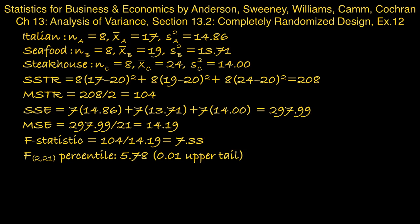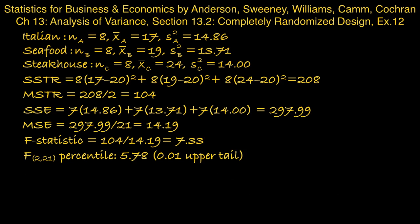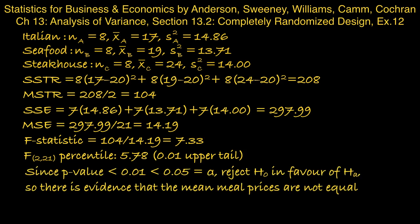So its upper tail will be less than 0.01. So therefore the p-value is less than 0.01, and so it's certainly less than 0.05 in our significance level. So we reject the null in favour of the alternative. So there is evidence that the mean meal prices are not equal in the different types of restaurant.